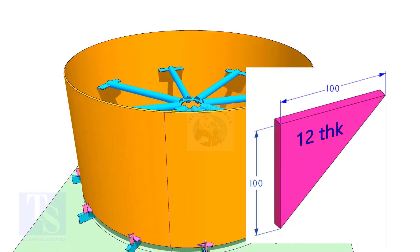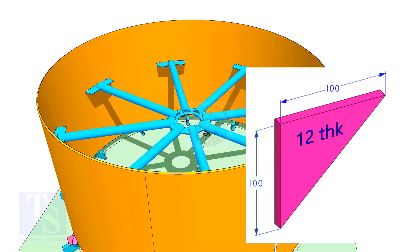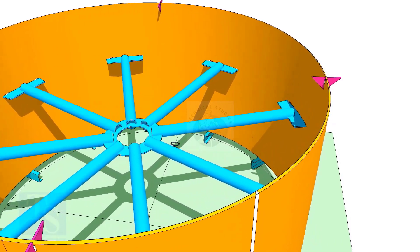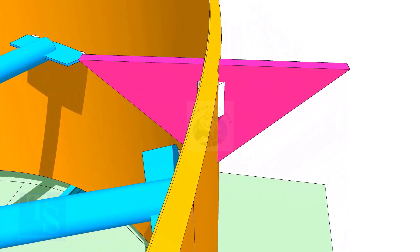Tack weld these brackets inside and outside the shell at least at four locations, 90 degrees apart. This will stop the top shell from falling down.